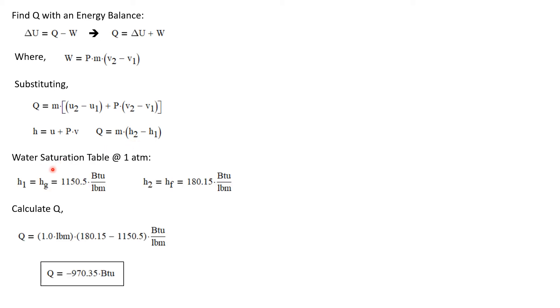Let's go to the water saturation table at one atmosphere and get some enthalpy values. At state one, the enthalpy is H sub G because it's a saturated vapor, and that's 1150.5 BTUs per pound mass. At state two, the enthalpy is H sub F because state two is a saturated liquid, and that has an enthalpy value of 180.15 BTUs per pound mass.